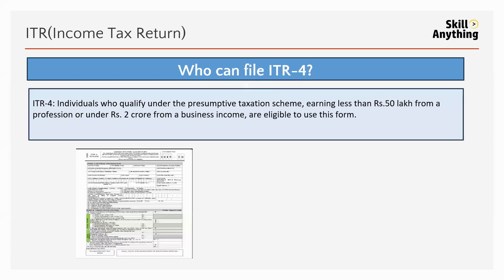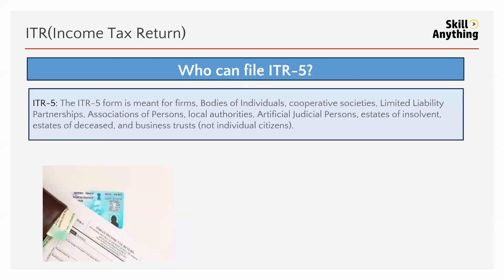ITR-4: An individual who qualifies under the presumptive taxation scheme, earning less than 50 lakh from a profession, or a business income group under rupees two crore, is eligible to use this form.